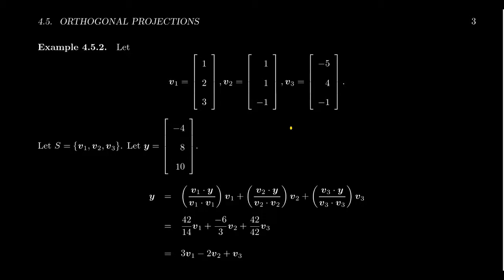Notice, if you take V1 dot V2, you're going to end up with 1 plus 2 minus 3. That's a zero. If you take V1 dot V3, that equals negative 5 plus 8 minus 3, which is zero.